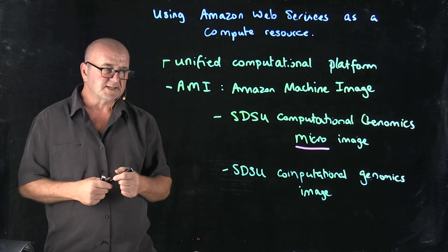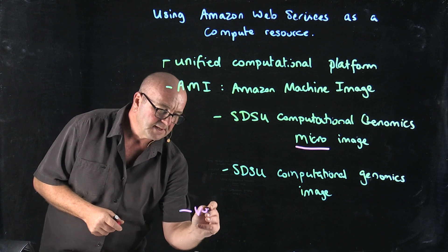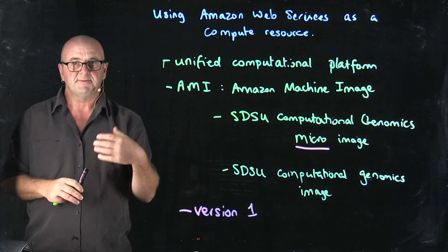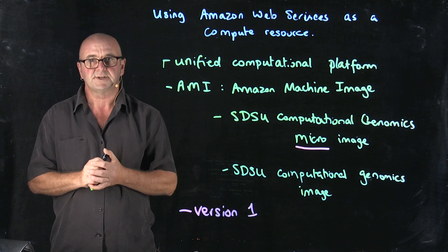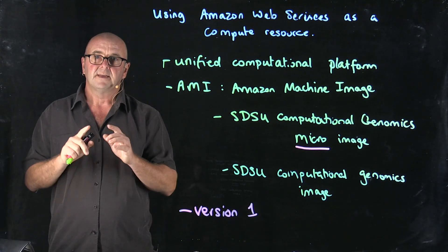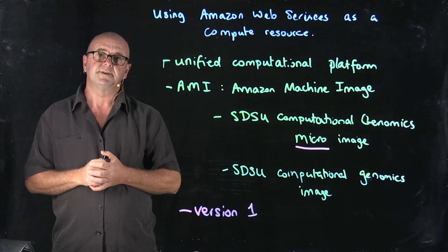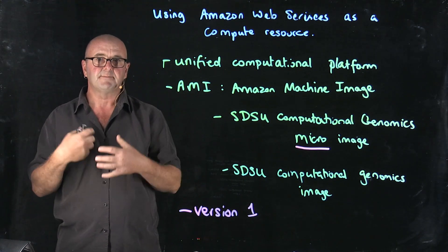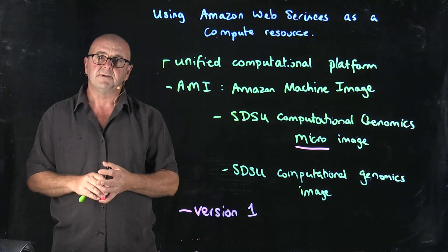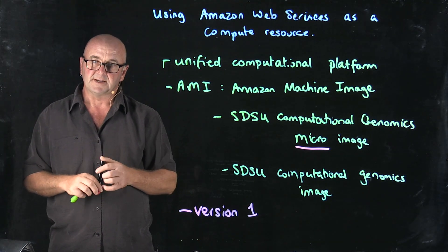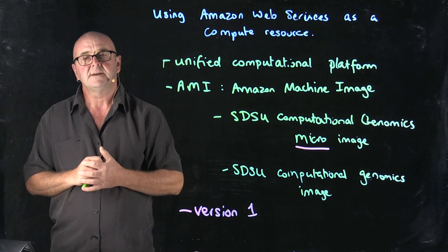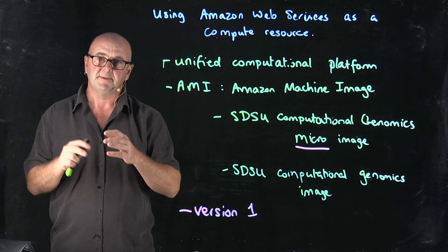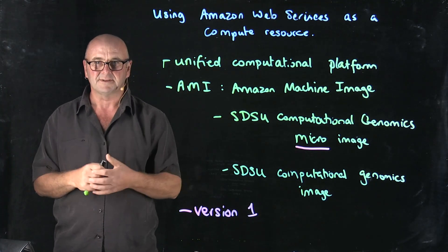Another note about these images: I'm going to update them from time to time. Right now we're on version one. I'll keep a versioning system so you can see which version is available online, and I'll try to only have the most recent version publicly available. As time progresses, software is updated, bugs are fixed, and improvements are made, so I try to keep these images relatively up to date. When you instantiate your image, check that you have the most recent version.